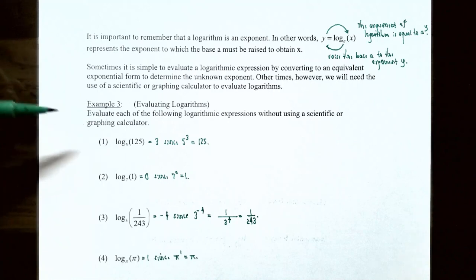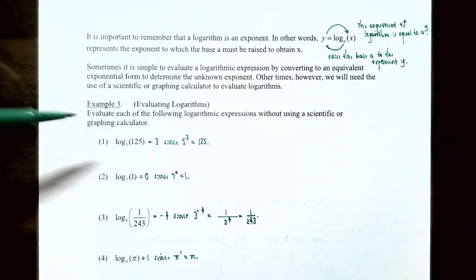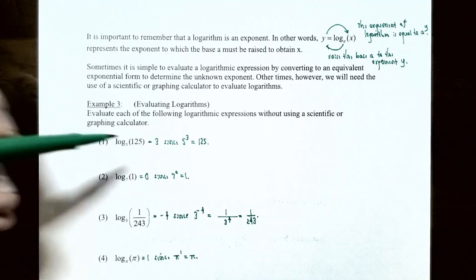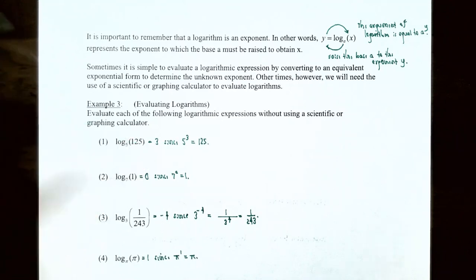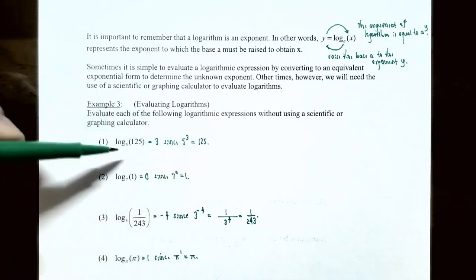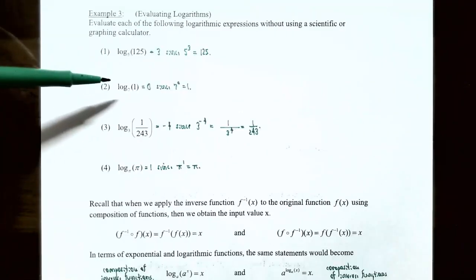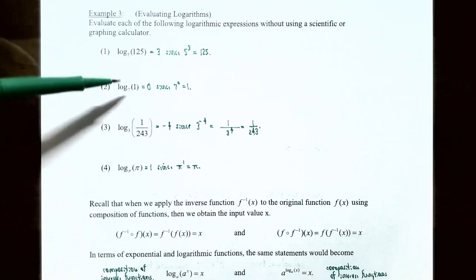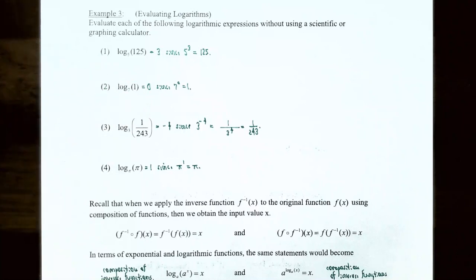Example 3: Evaluate each logarithm without a calculator. (1) log base 5 of 125: what exponent on base 5 gives 125? Since 5³ = 125, the answer is 3. (2) log base 7 of 1: what exponent on base 7 gives 1? Since anything raised to the 0 power equals 1, 7⁰ = 1, so log base 7 of 1 = 0.